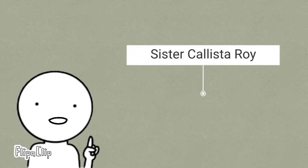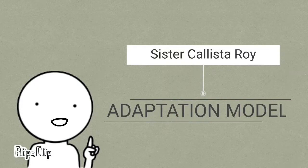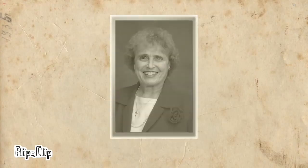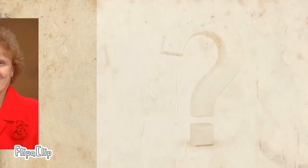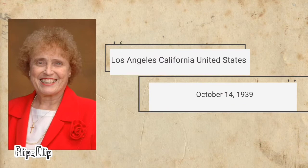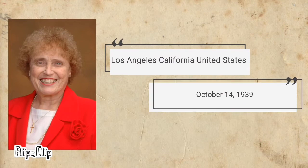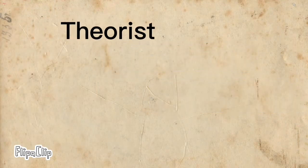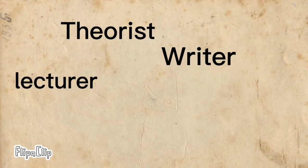For today's video we are going to explore the theory of Sister Calista Roy — the Adaptation Model of Nursing. Before we talk about her theory, let's know who Sister Calista Roy is. Sister Calista Roy was born in Los Angeles, California, United States on October 14, 1939. She is a nursing theorist, writer, lecturer,